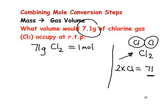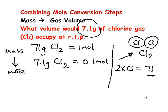We've got 7.1 grams, which we can see is a tenth of 71, so that's 0.1 mol of Cl₂. At this stage, I've changed from mass into moles. I'm now going to change from moles into volume, as required — the volume at RTP. We'll turn to the next slide to do this.